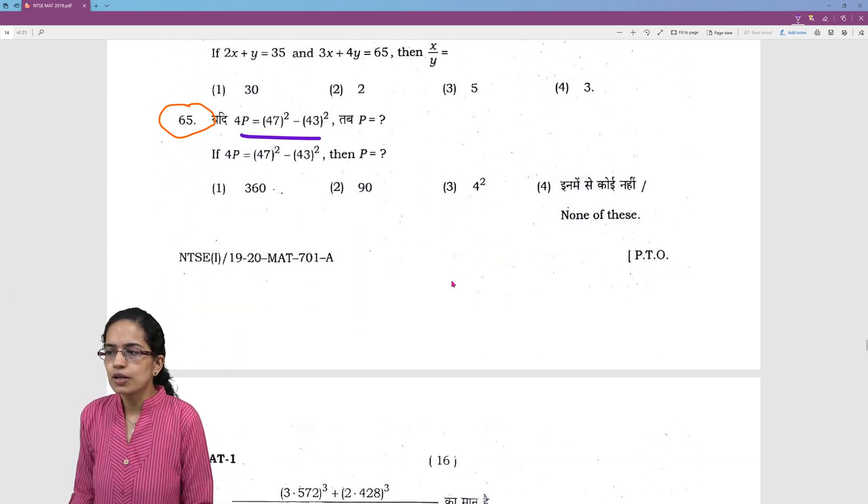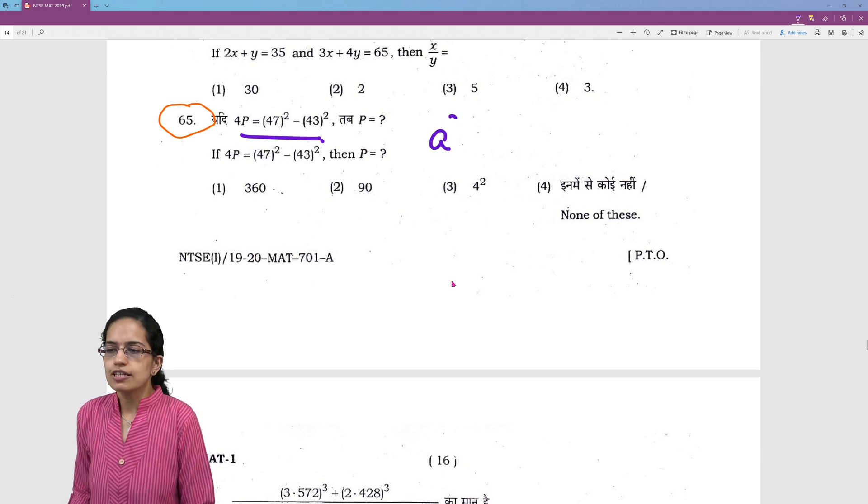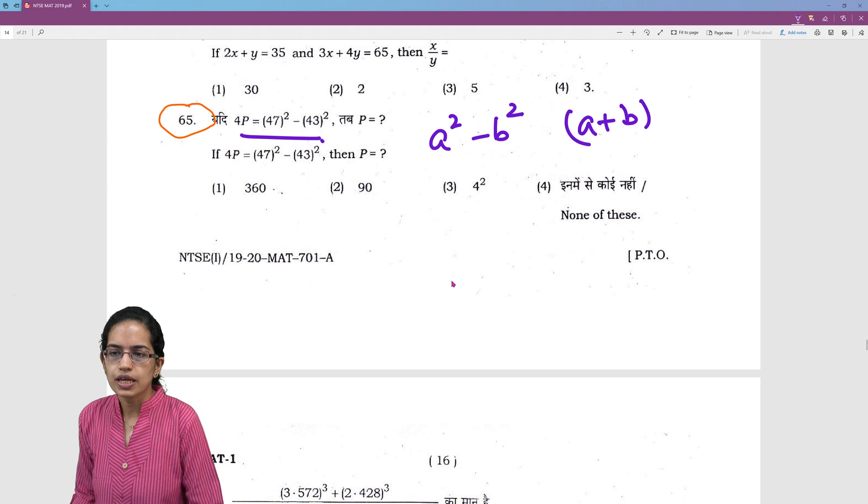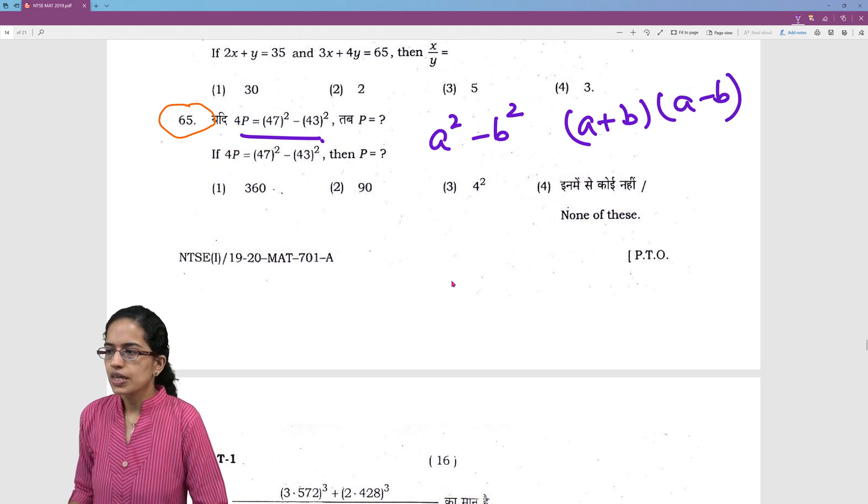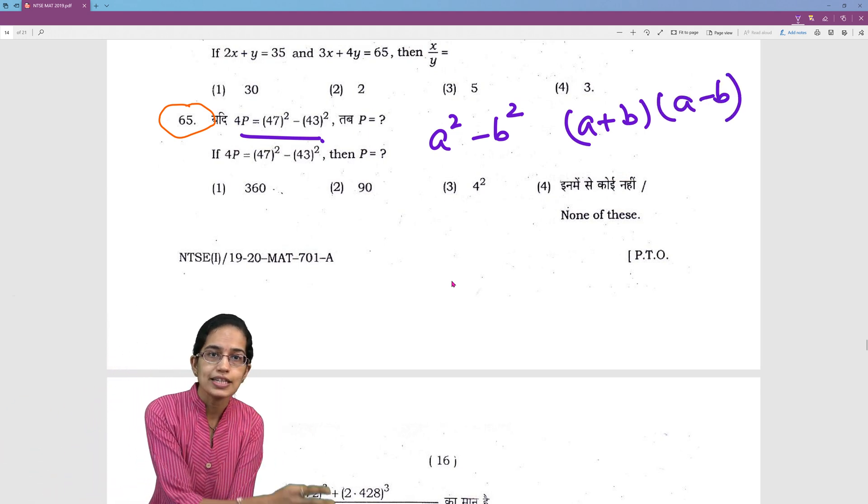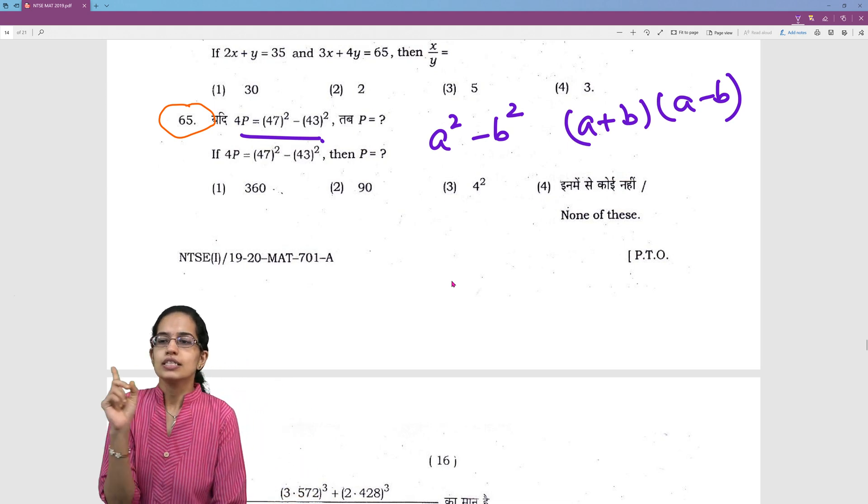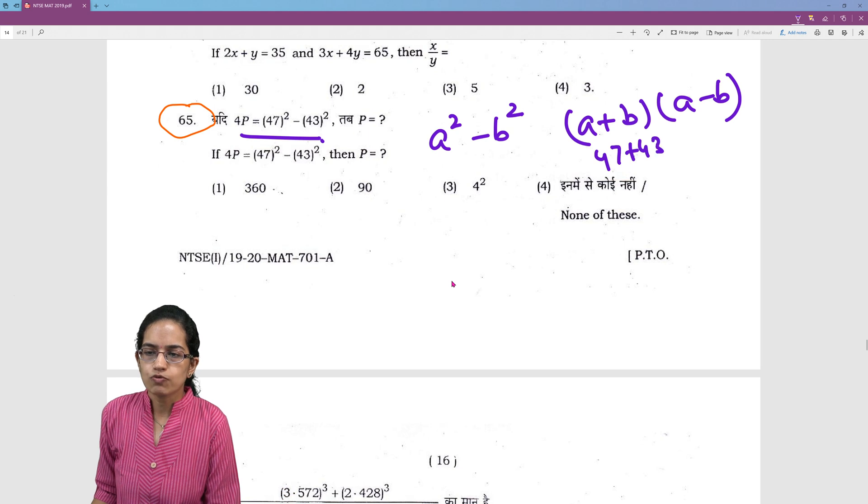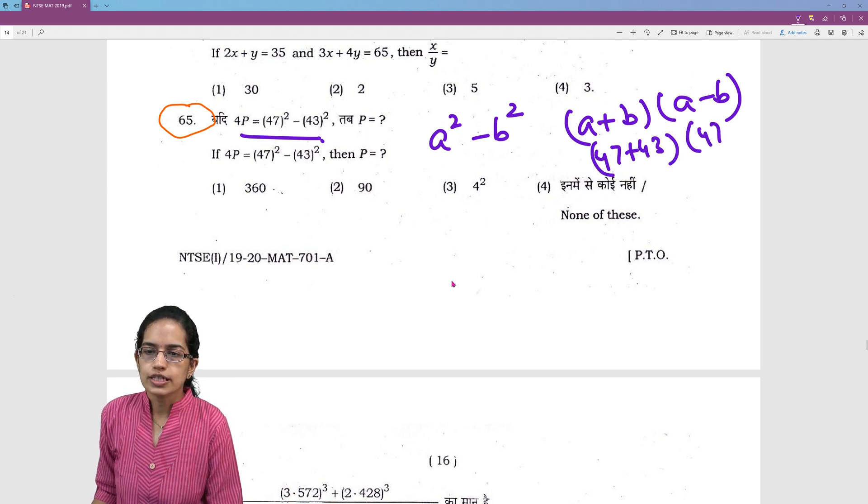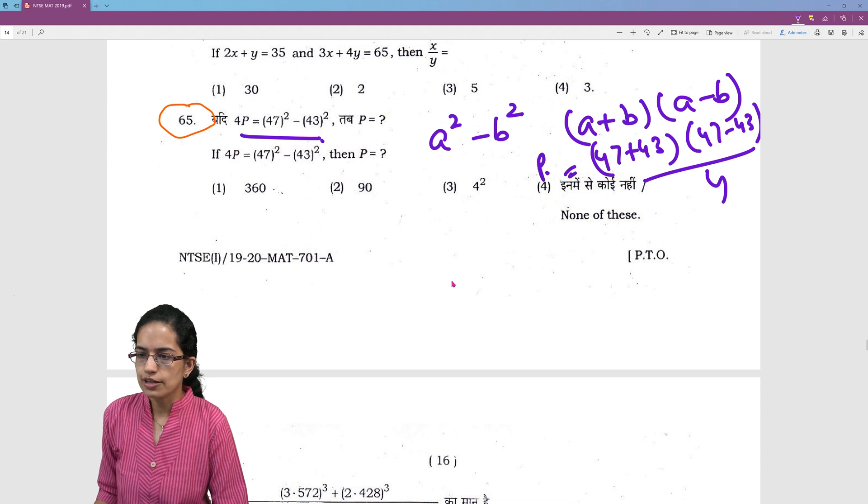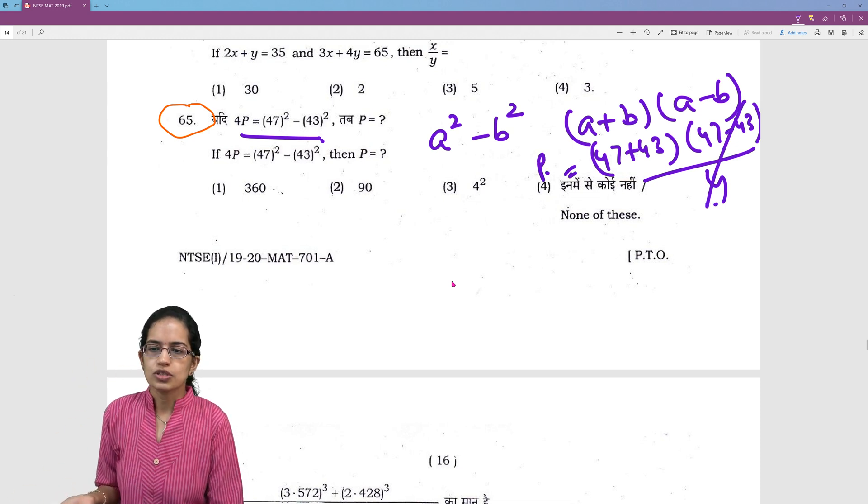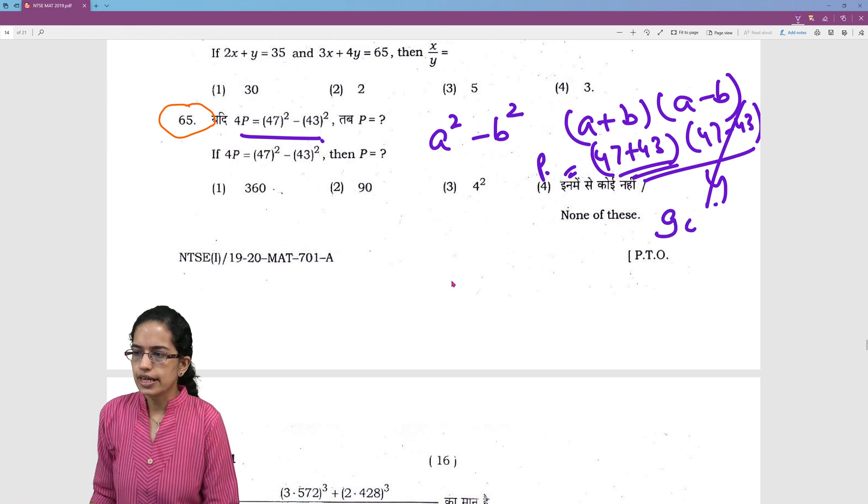Again, this is a simple question of mathematics. This is a formulation of a square minus b square where you do a plus b into a minus b rather than solving 47 into 47 minus 43 into 43. It's simply a square minus b square. So, you would do 47 plus 43 into 47 minus 43 divided by 4 and that would give you the value of P because this is 4P and this would cancel out. So, this would remain as the only answer which is 90.